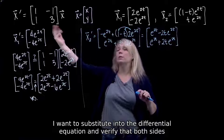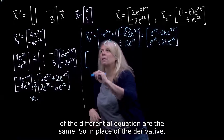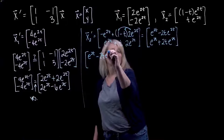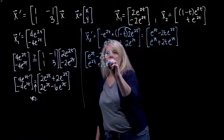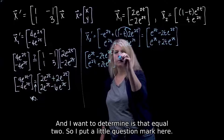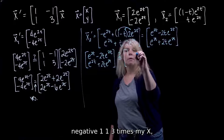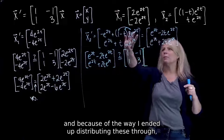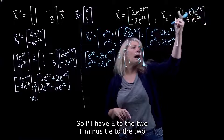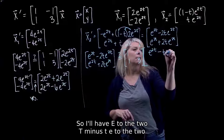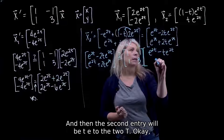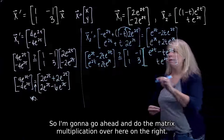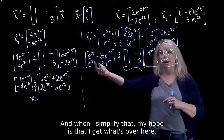I want to substitute into the differential equation and verify that both sides are the same. In place of the derivative, I put what I got for the derivative. I want to determine — question mark — is that equal to the matrix (1, negative 1, 1, 3) times x2? Distributing through, the first entry is e to the 2t minus t e to the 2t, and the second entry is t e to the 2t. I'm going to do the matrix multiplication on the right and hope I get what's on the left, since this really is a solution.